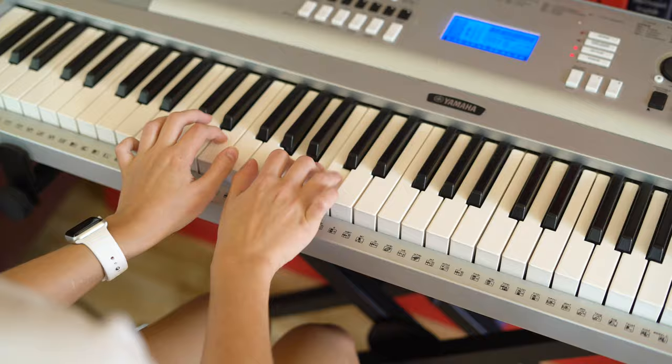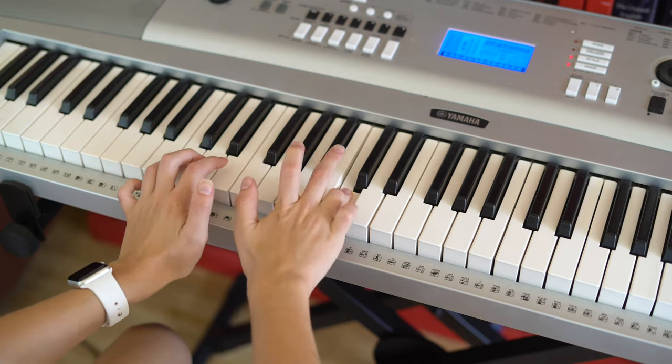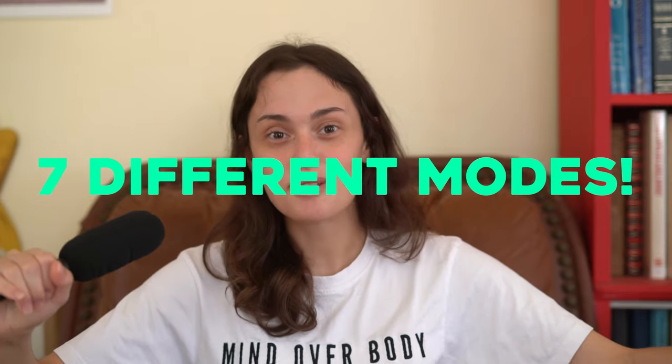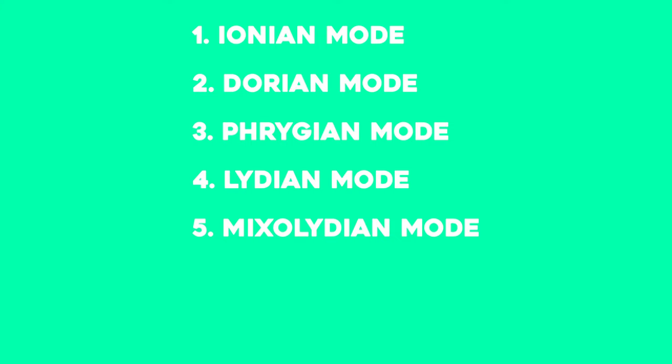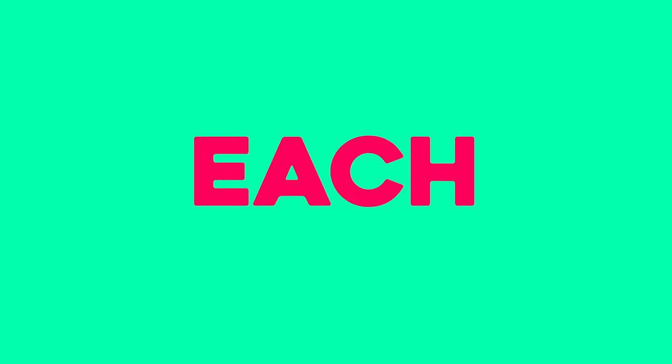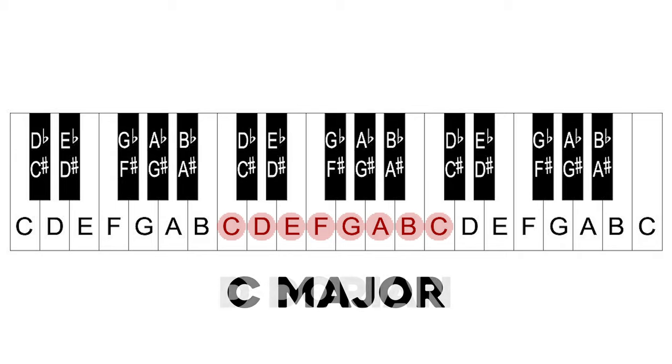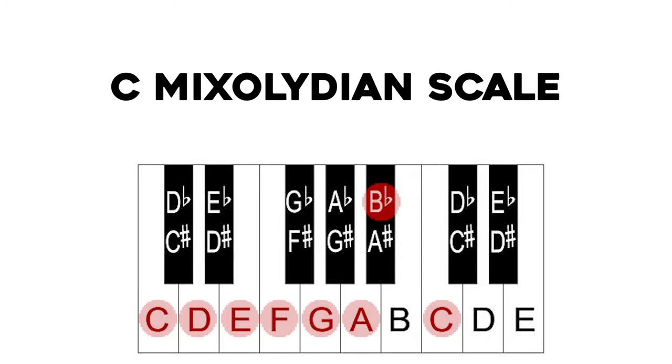What is a mode in music theory? What is mixolydian? Modes take the regular scales we know, like the C major scale, and shift the notes in the scale to give us different sounds and colors. There are seven different modes covered in this video: Ionian, Dorian, Phrygian, Lydian, Mixolydian, Aeolian, and Locrian. Each mode will be shown two ways: starting on different notes of the C major scale, and built from the root note C. The regular C major scale is considered C Ionian mode.